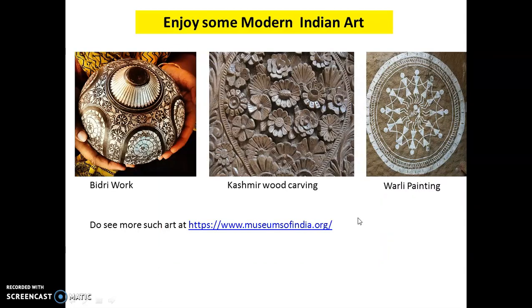In ancient and medieval India, art was a very important aspect of society. We have artisans even today and should be proud of them. This is Bidri work done on metal, found in Bidar in Karnataka. This is Kashmiri wood carving — beautiful, isn't it? And this is Warli painting from our very own Palghar district, using simple forms — triangles, circles, and lines. You can try making Warli paintings yourself, and to see more Indian art, visit www.museumsofindia.org.